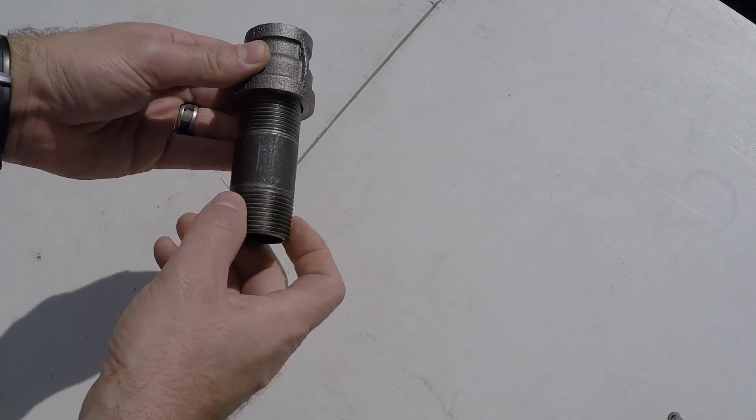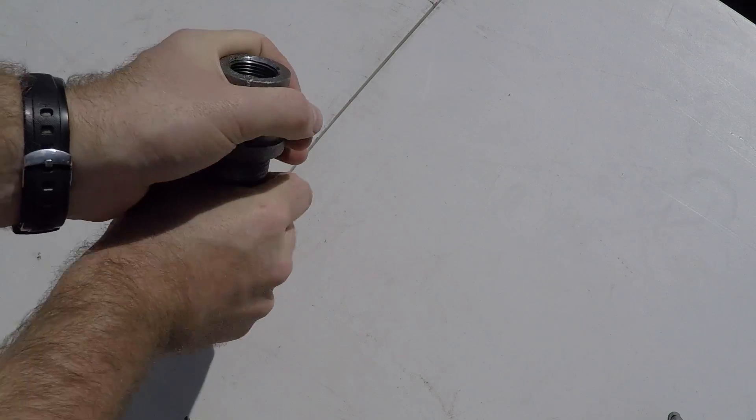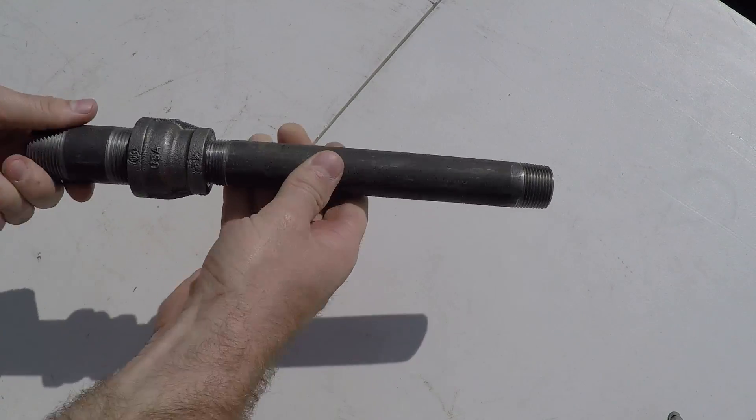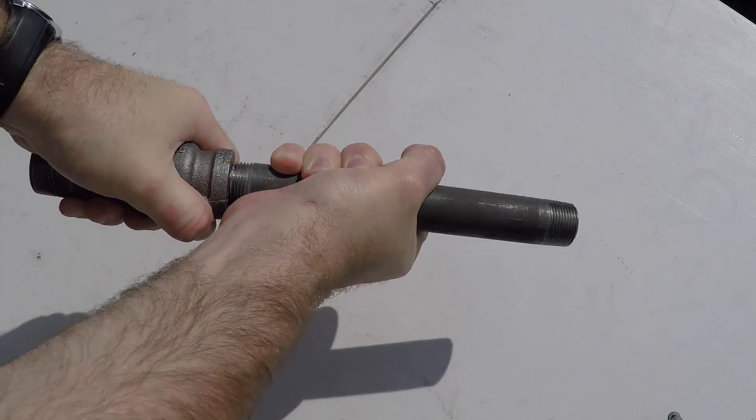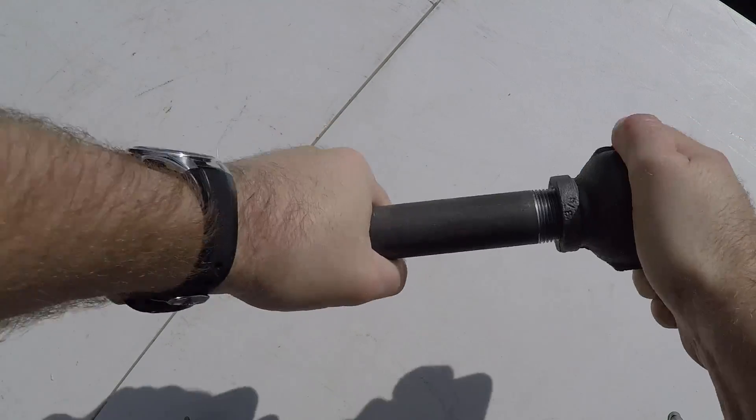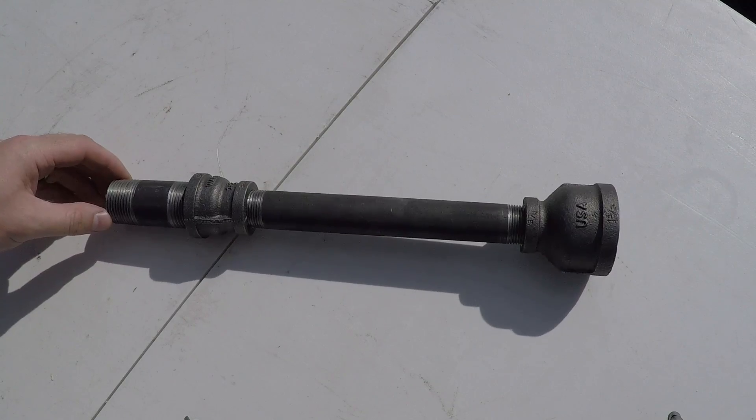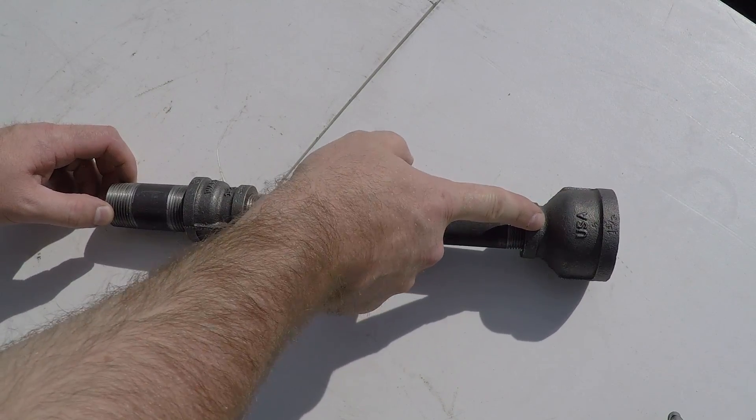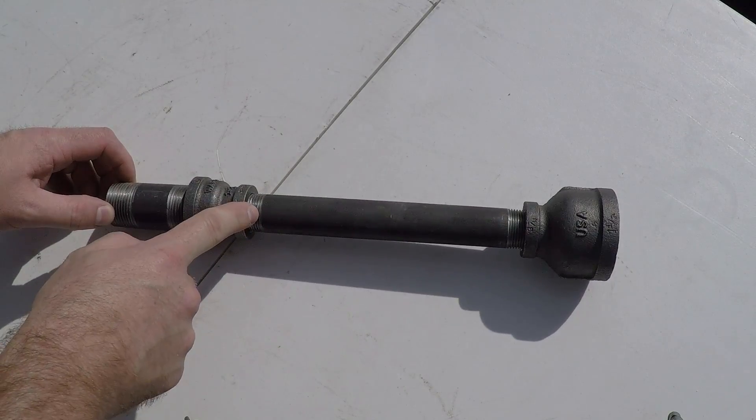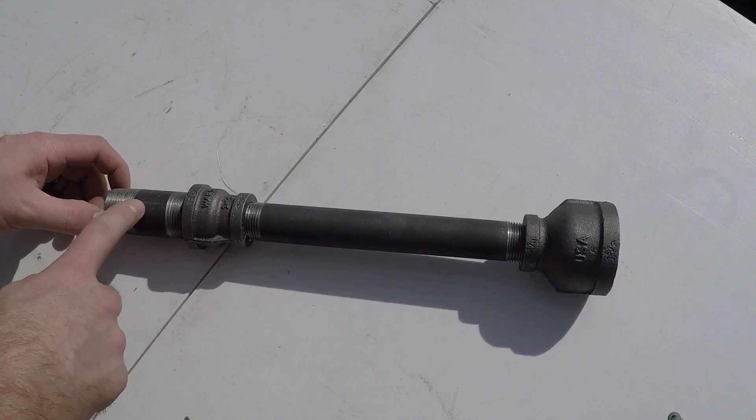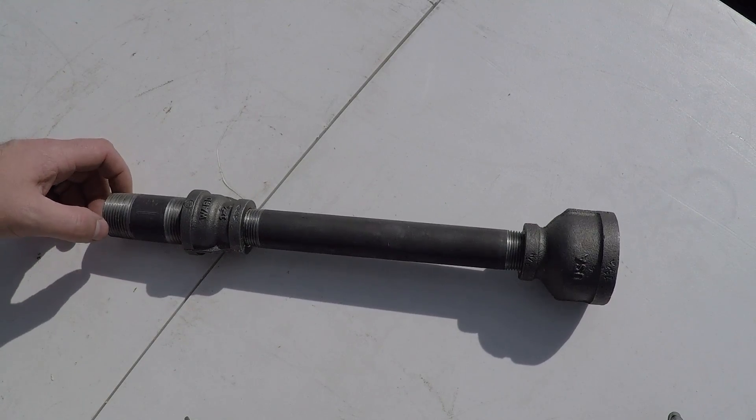The first step is we're going to assemble the cast iron pieces. These can just be hand tight. They're not going to be pressurized. This forms the basic body of the burner. Here at the 1-1/2 to 3-quarter inch reducer, it forms the venturi. Then we have the body, and then the flare at the end going from 3-quarter to 1 inch to slow down the airflow.